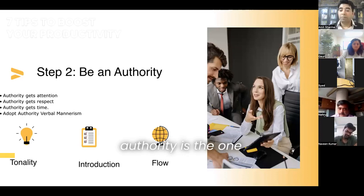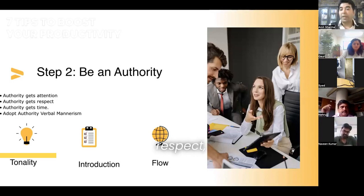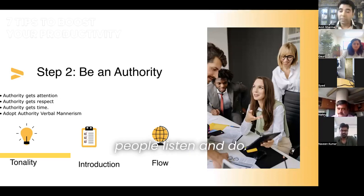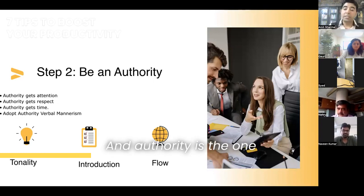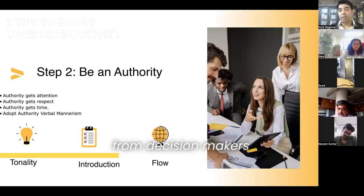Now, authority is the one that gets attention from people. An important person is the one who gets respect, which means whatever they say, people listen and do. And authority is the one that gets time from gatekeepers and decision makers.